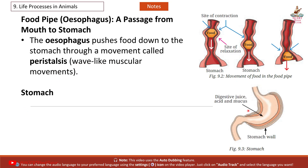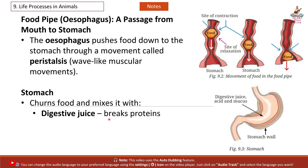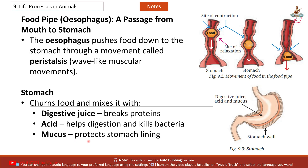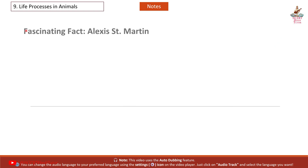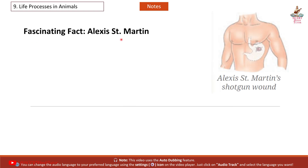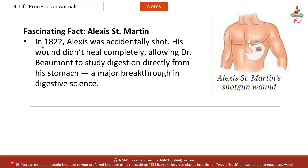The stomach churns food and mixes it with digestive juice, breaking down proteins. Acid helps digestion and kills bacteria, while mucus protects the stomach lining. Fascinating fact: In 1822, Alexis St. Martin was accidentally shot. His wound didn't heal completely, allowing Dr. Beaumont to study digestion directly from his stomach — a major breakthrough in digestive science.